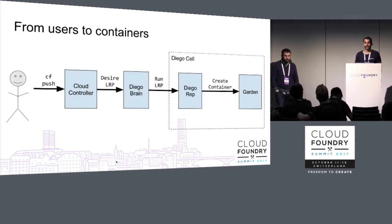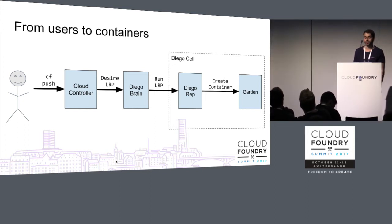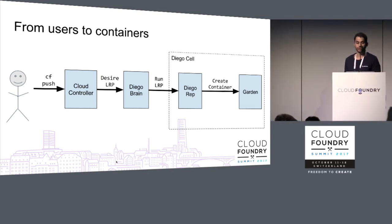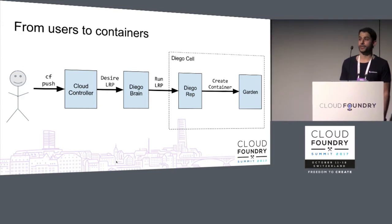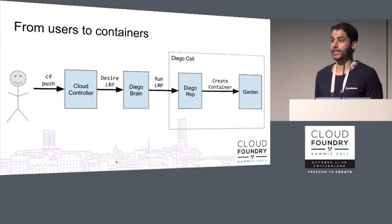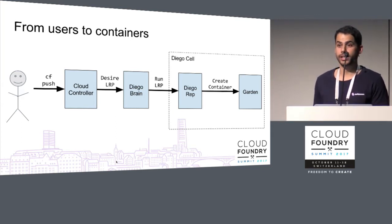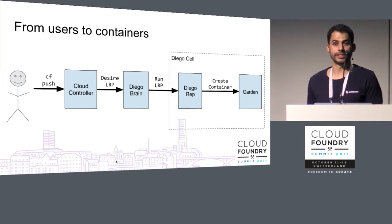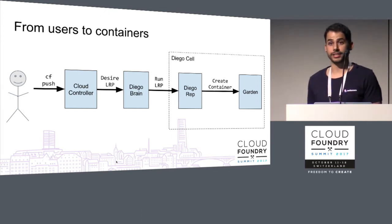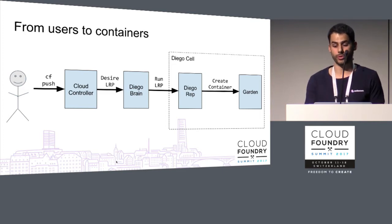From users to containers: user processes are running inside containers in Cloud Foundry. When a user does a CF push, the CLI talks to the cloud controller, which in turn asks the Diego brain to schedule a long-run process. Diego brain picks a cell inside the cluster and places this request. Locally, in a cell, there is another Diego component called rep, which picks up this request and instructs Garden to create a container, which finally hosts the user process.